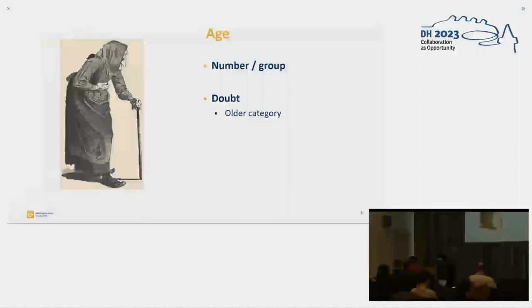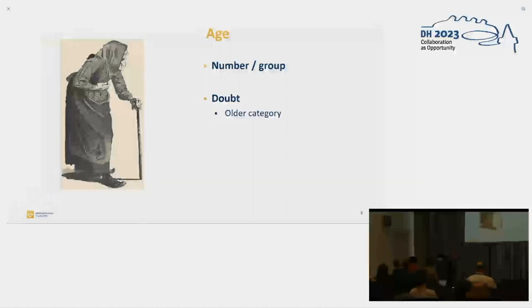Another thing is that we instructed our annotators to always select the older category when they were in doubt, but that also makes sure that we have different groupings and different numbers within those groups.